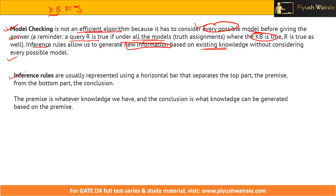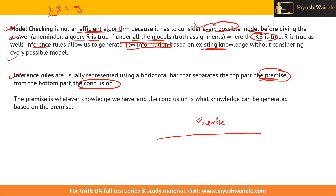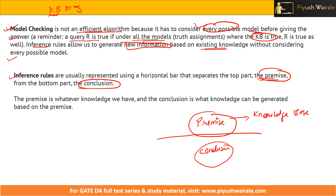What are inference rules? Inference rules are usually represented using a horizontal bar that separates the top part, called the premise, from the bottom part, called the conclusion. The premise is basically the knowledge we have — the existing knowledge base. Based on this premise, whatever conclusion we can draw is the conclusion. The premise is whatever knowledge we have, and the conclusion is what new knowledge can be generated based on the premise.